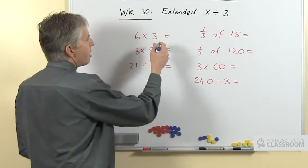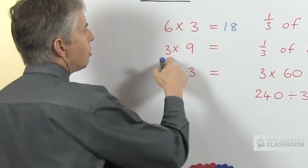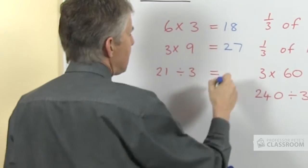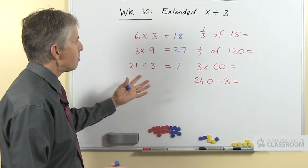We've got some straightforward ordinary revision questions: 6 times 3, turnarounds like 3 times 9, and ordinary division questions like 21 divided by 3.